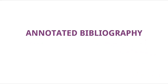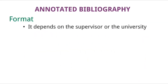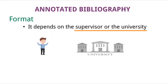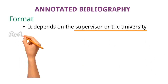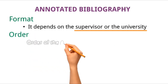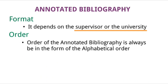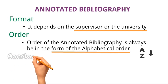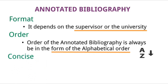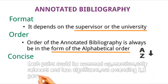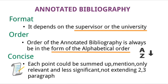Starting with the format — generally the format depends on the supervisor or the university. The order of the annotated bibliography should always be in alphabetical order of the author's name, as already mentioned. Next is being concise: in annotated bibliography, each source should be summed up in a single paragraph. Mention only the relevant and significant details and do not extend it to three or four paragraphs.